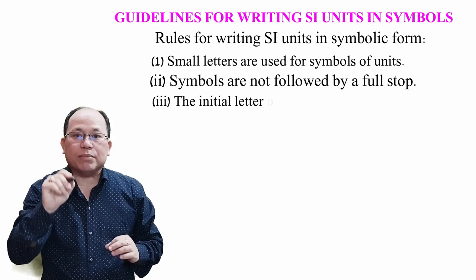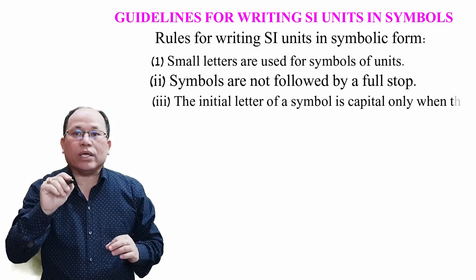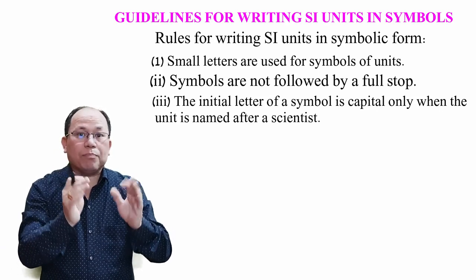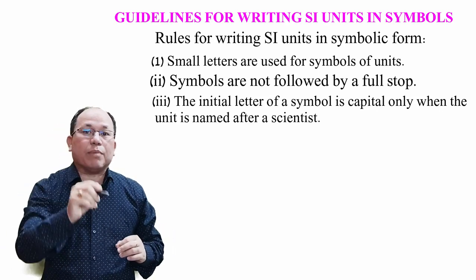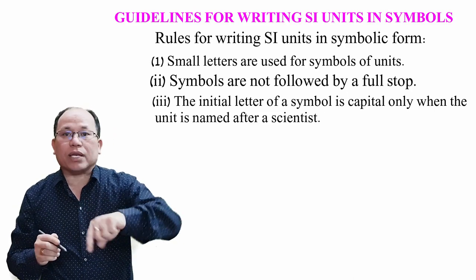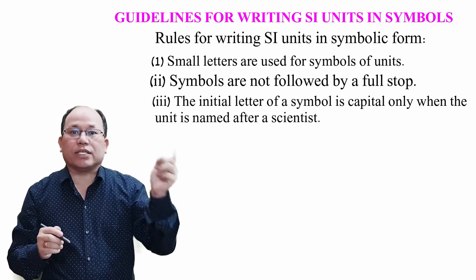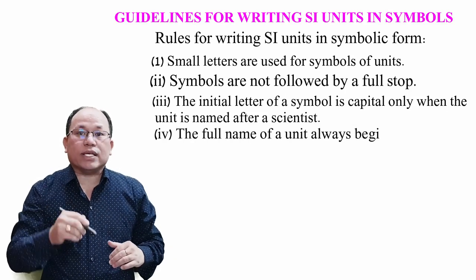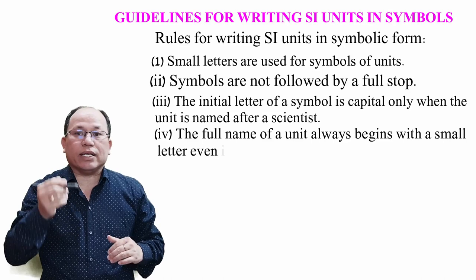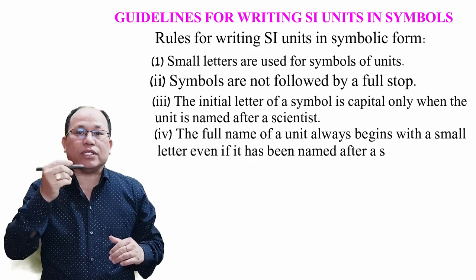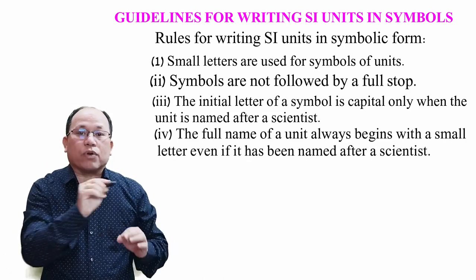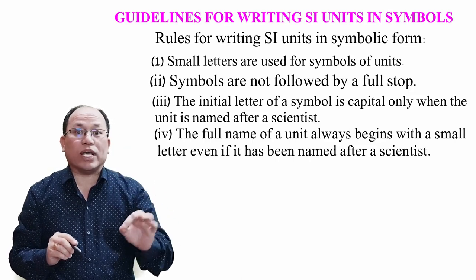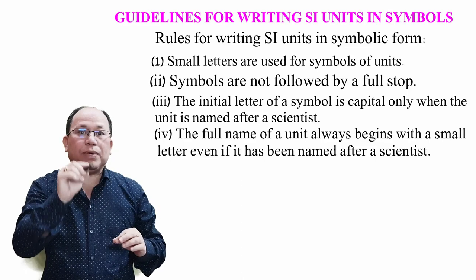Suppose, let's take the example of ampere. So ampere, what you have to write, symbol, meaning capital A, because this is a scientist name, and ampere scientist. Next point: the full name of a unit always begins with a small letter, even if it is named after a scientist. That means, after scientist name ampere, then capital A as symbol, but the name is in small, so small a, ampere.